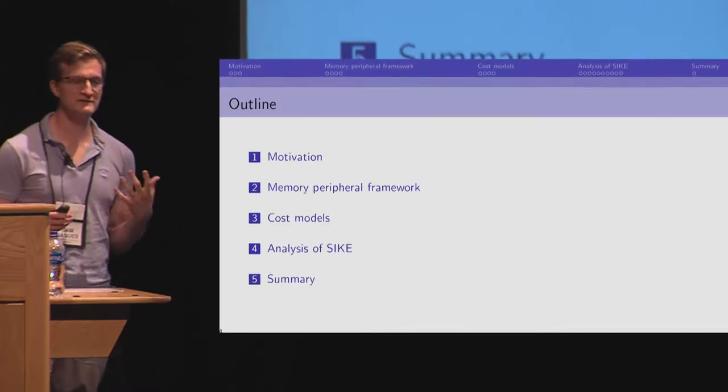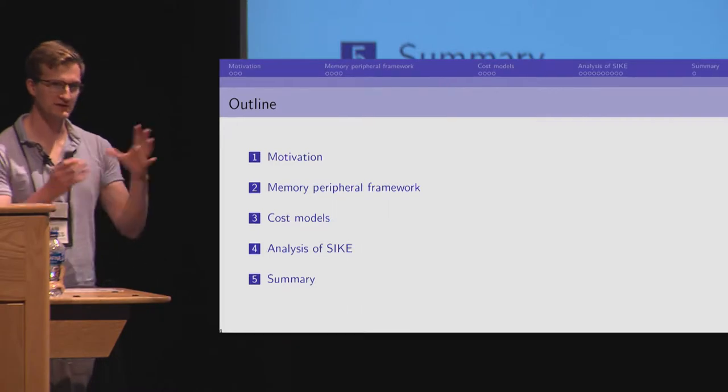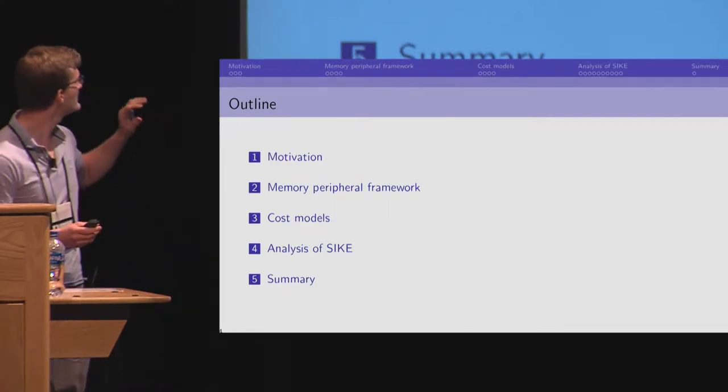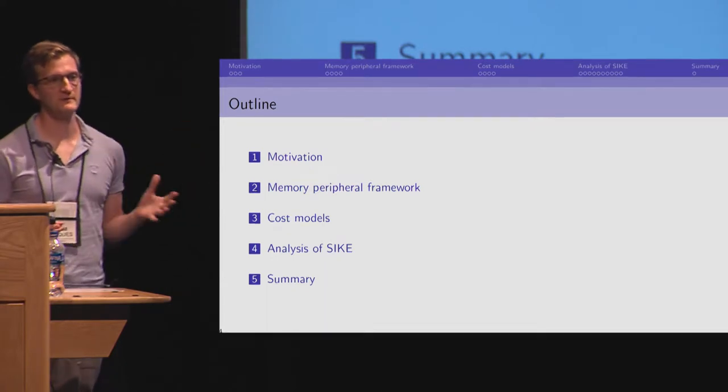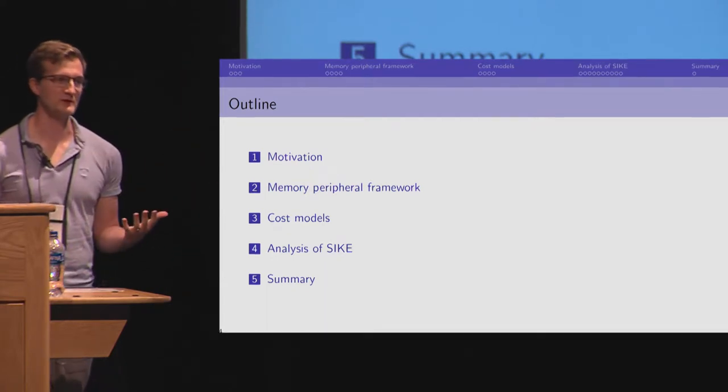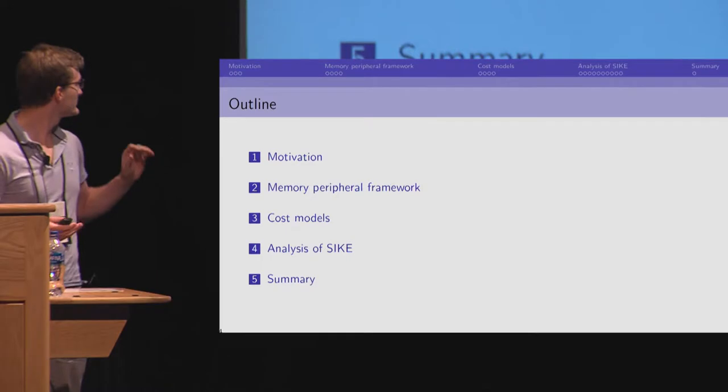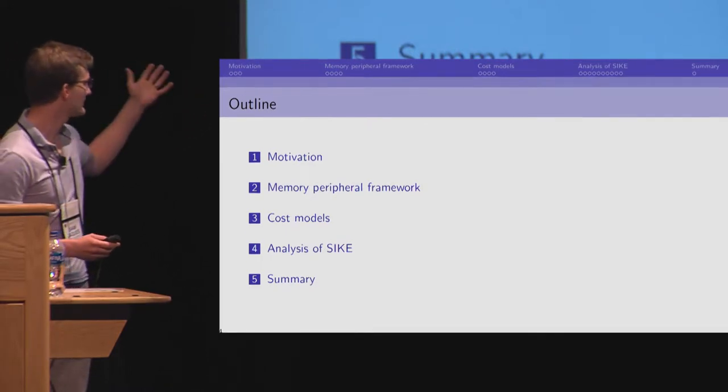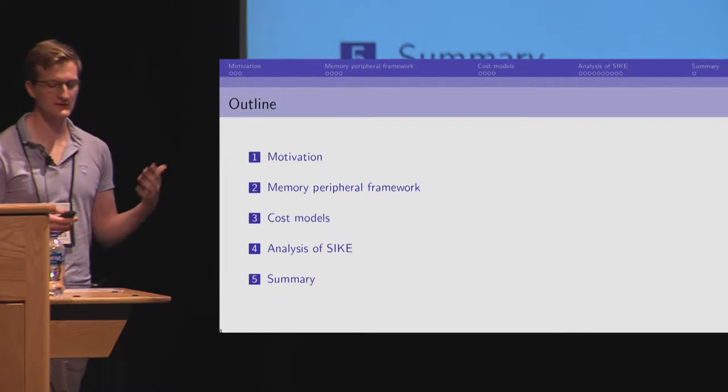So, in this talk, I'll give some of our motivation and what we tried to do with our new model for quantum computers. Then, introduce the main contribution of our paper, this memory peripheral framework. This framework accommodates different cost models. We provide two. We use those cost models to analyze Psyc. And I'll conclude after that.